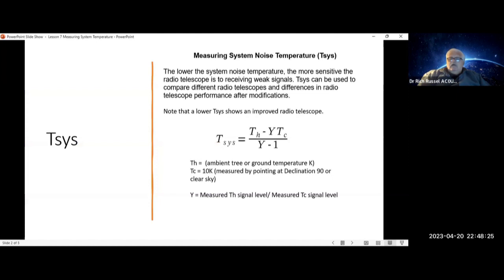What is T-Hot? It can be estimated using the ambient ground temperature, which is also going to be used by aiming at trees and converting that to degrees Kelvin.